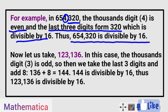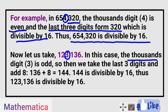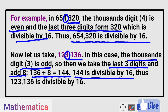That was the case when the digit at the thousands place is even. The next example is one where the thousands place digit is odd. So in this case, 123136 — the thousands place digit is 3, and 3 is odd. So in this case, we add 8 to the last 3 digits. The last 3 digits are 136. So 136 plus 8 equals 144, and 144 is divisible by 16. Therefore the given number 123136 is also divisible by 16.